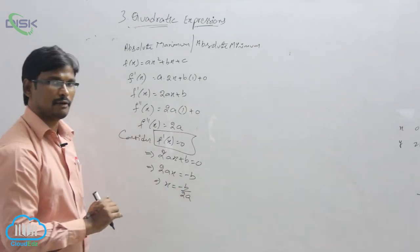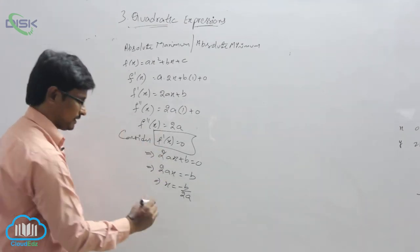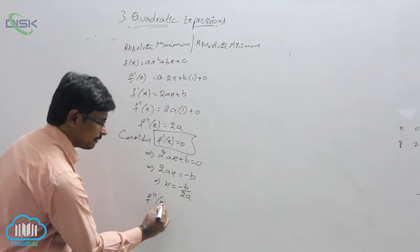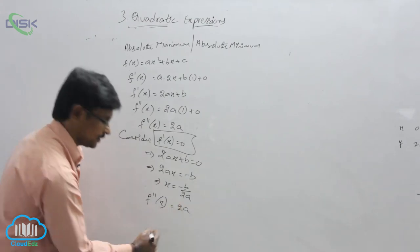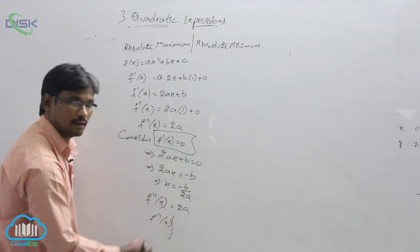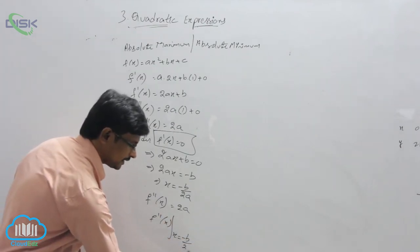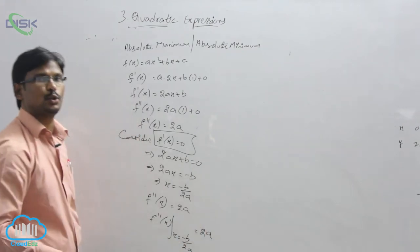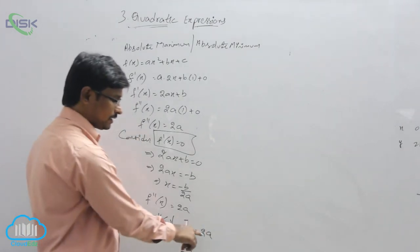Now this x value we have to substitute into f double dash of x. f double dash of x is 2a. So f double dash of x at x equals minus b by 2a — there is no value to substitute, so the answer is 2a.